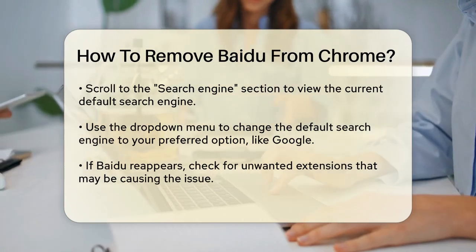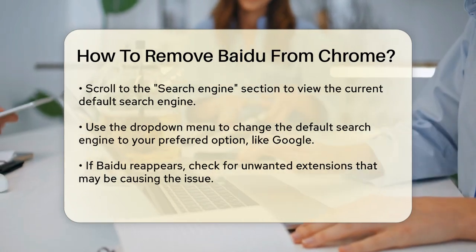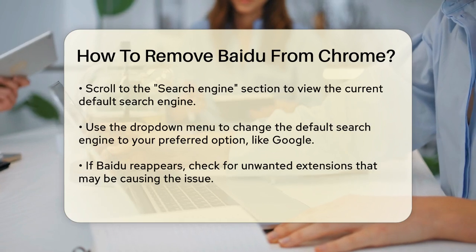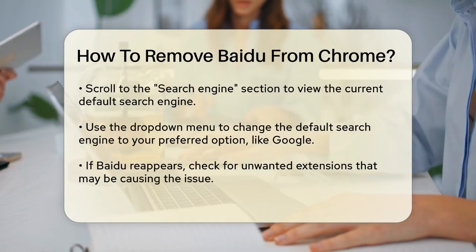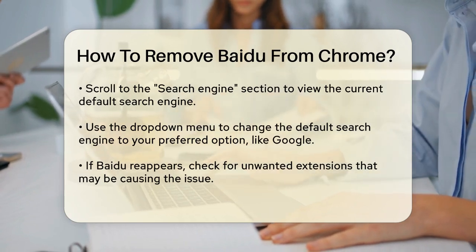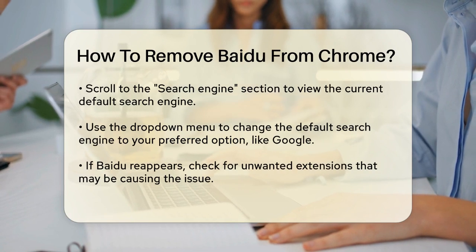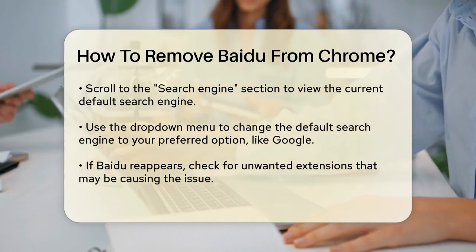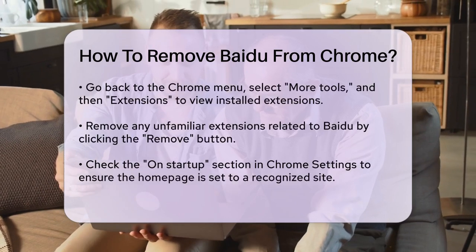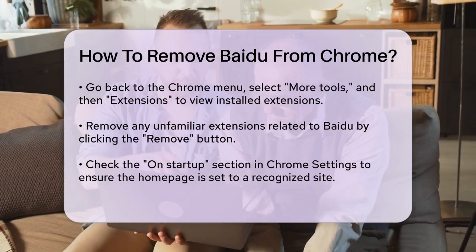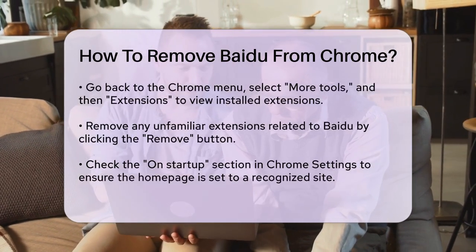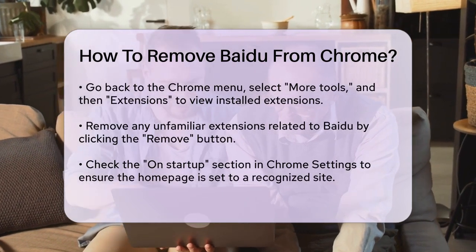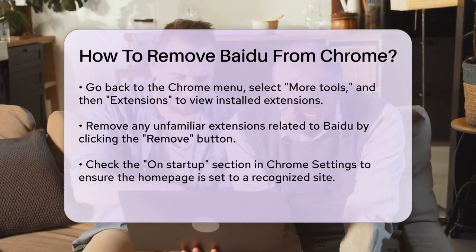However, if Baidu keeps coming back as the default search engine, there might be some additional steps you need to take. Sometimes Baidu can be part of a larger software package or even malware, so it's a good idea to check for any unwanted extensions. To do this, go back to the Chrome menu — the three vertical dots — and select More Tools, followed by Extensions.